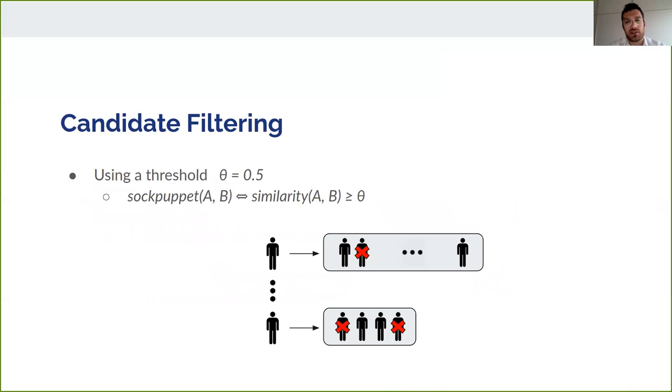After we extracted the blocks, we pruned them by deleting each pair of nodes having a similarity score lower than a threshold, in our case 0.5. So, we can state that we'll have a sockpuppet link between node A and B if and only if their similarity is greater than theta.